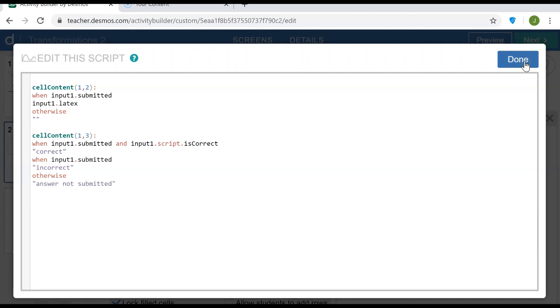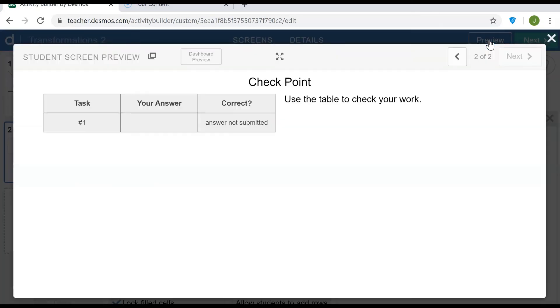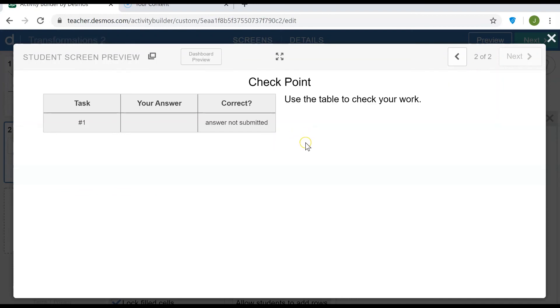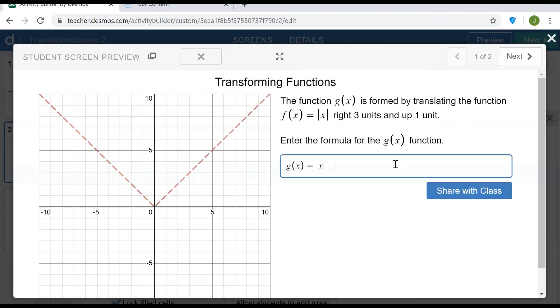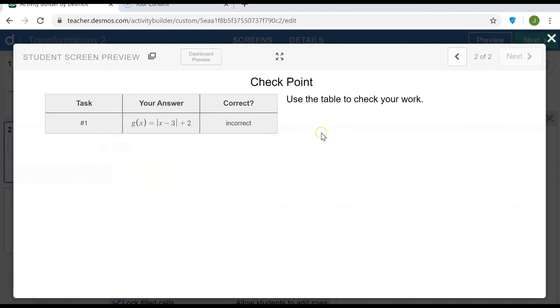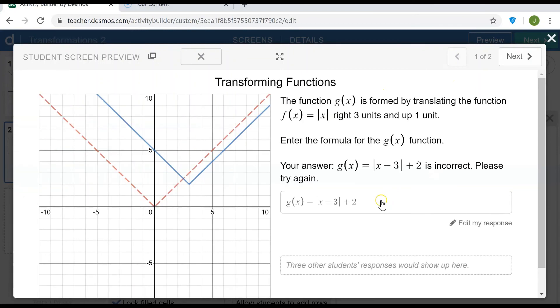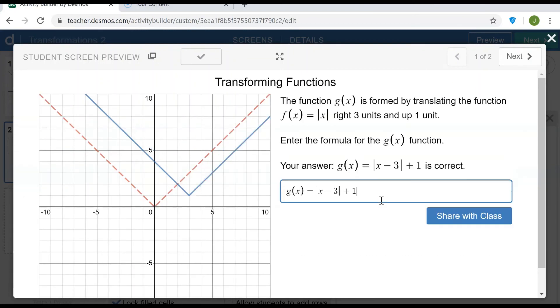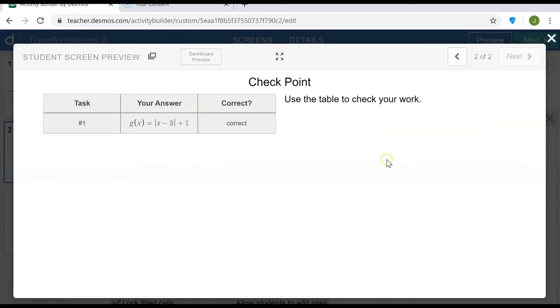So let's take one more look at the activity. So this time we see answer not submitted. If I go back and type in a partial answer or an incorrect answer and share it with the class, in the table I see that it's incorrect. And if I go back and correct that response and submit it again, I see that it's correct.